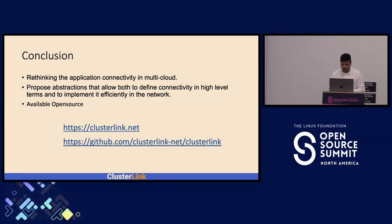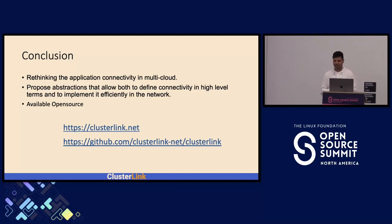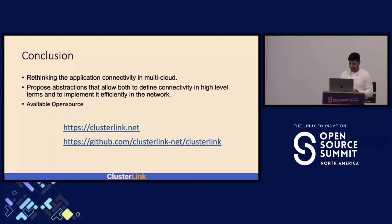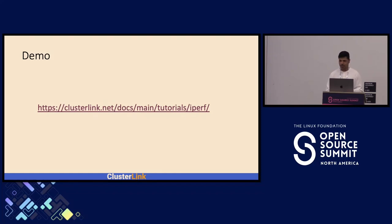In conclusion, I highlighted the need to rethink application connectivity in a multi-cloud or multi-cluster setting, and proposed abstractions to define connectivity in high-level terms and ways to implement it efficiently in the network using ClusterLink. ClusterLink is available open source and can be tried out in your environment. Next I'll go through a simple demo to demonstrate how ClusterLink can be used to connect applications across two clusters.